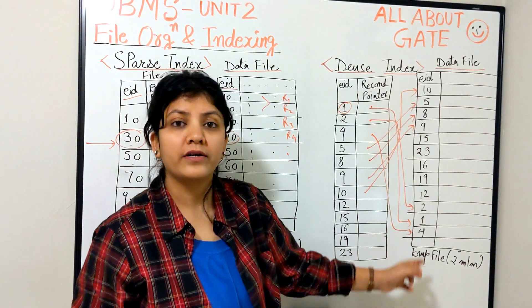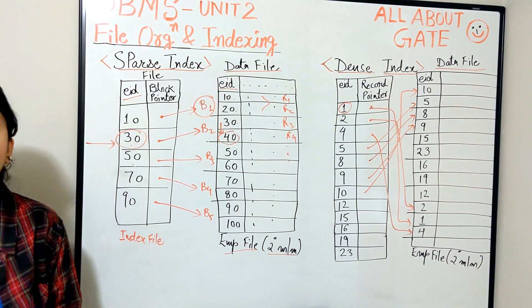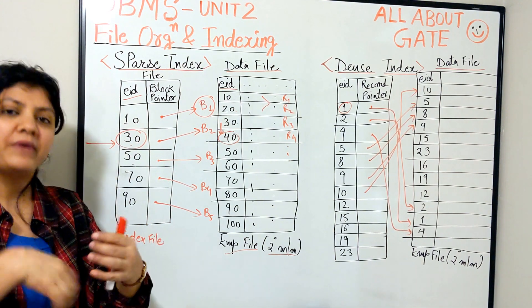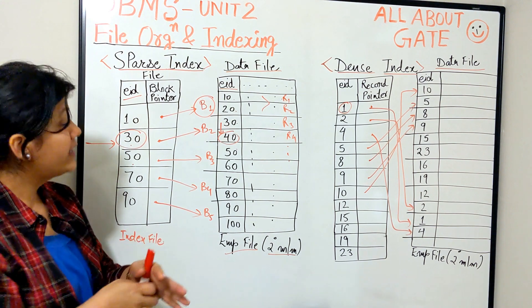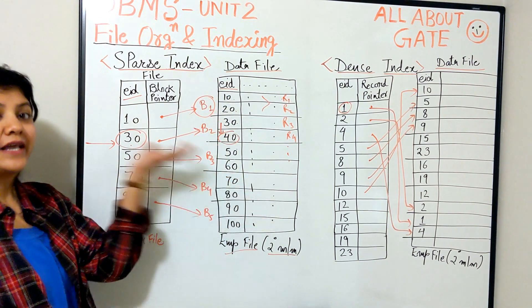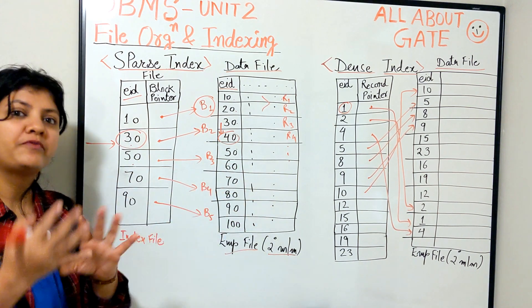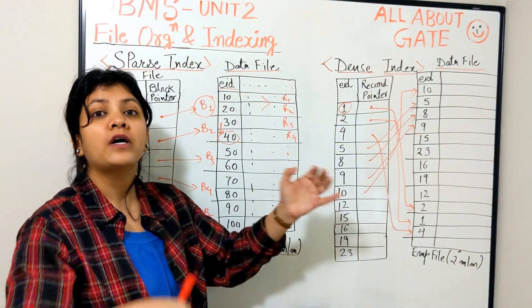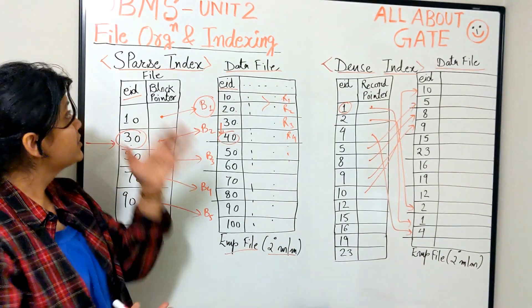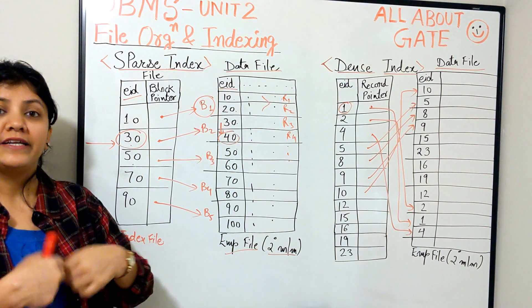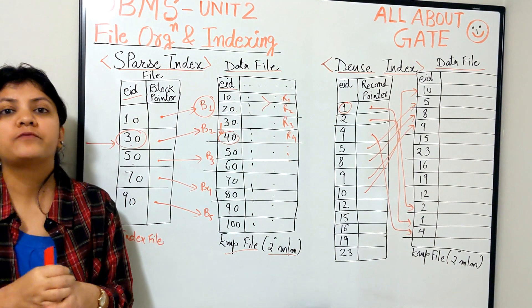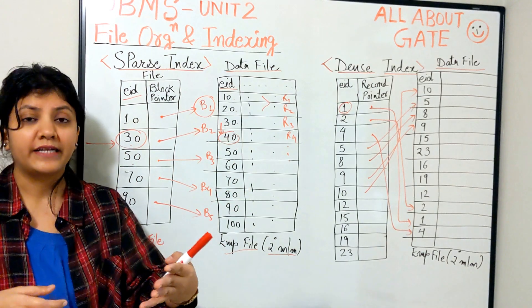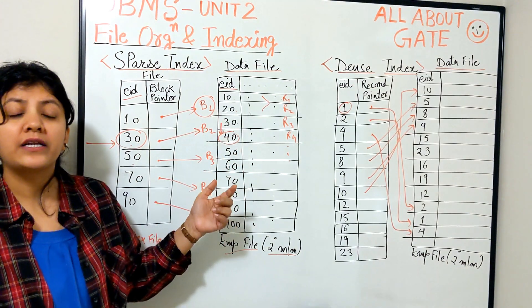Why is it dense? Because it's an unordered field. Usually when you make an index file on an unordered field, at the first level you get a dense file. When you make the index file on an ordered field, you are likely to get a sparse index file. The difference is: sparse consumes less space and has fewer entries, while dense consumes more space and has more entries. These are the two concepts of index file nature — sparse and dense — and you will frequently see these terms in exam questions.